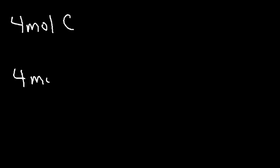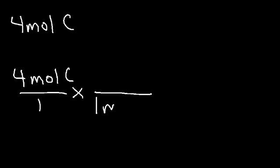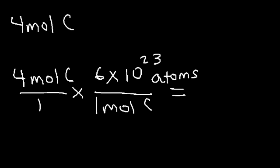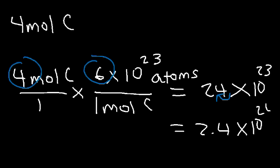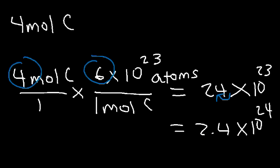Start with what we have: four moles of carbon over one. Based on our conversion, one mole is equal to Avogadro's number — rounding to 6 times 10 to the 23 atoms of carbon. So what's 4 times 6 times 10 to the 23? Four times 6 is 24, giving us 24 times 10 to the 23. Moving the decimal point one unit to the left gives 2.4 times 10 to the 24. In scientific notation, the number must be between 1 and 10.